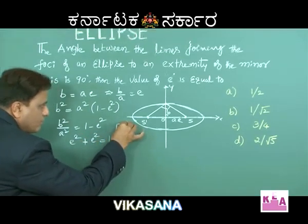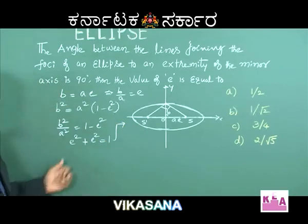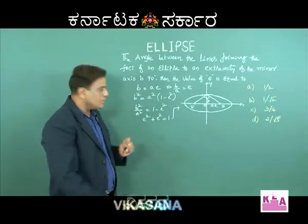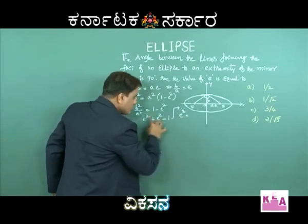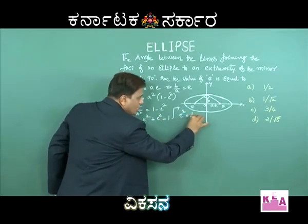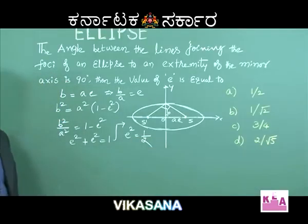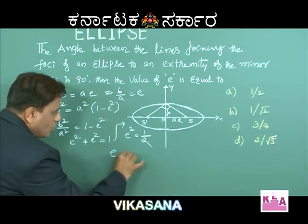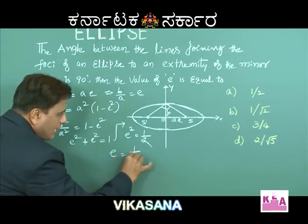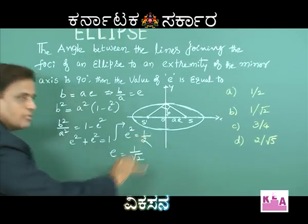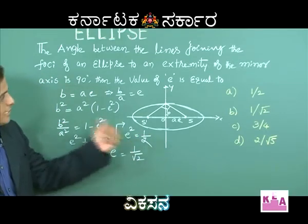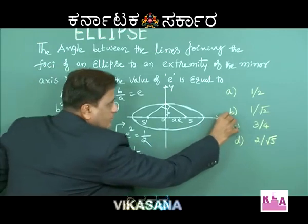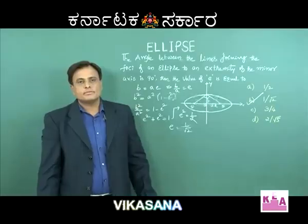Therefore 2e² = 1, so e² = 1/2, and e = 1/√2. The eccentricity is 1/√2. So the right option is B.